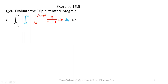The integral given to us is limit from 0 to 7, limit from 0 to 2, limit from 0 to 4 minus q square root, and we have to integrate q over r plus 1 for the sequence of variables p, q, and r. In triple iterative integrals, we have three signs of integration and three variables.